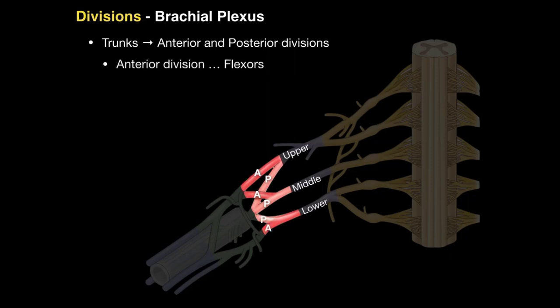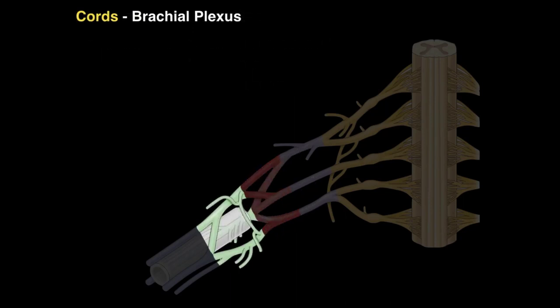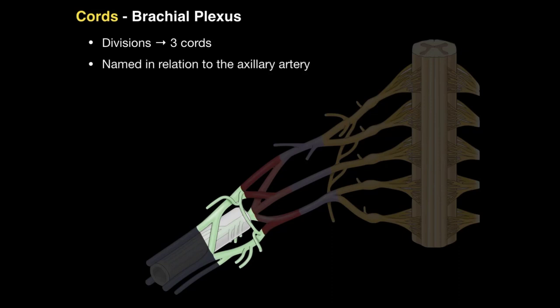The anterior divisions give rise to motor neurons that go to flexors, while the posterior divisions give rise to motor neurons that go to extensors. These divisions then give rise to what are called the cords of the brachial plexus, which are named in relation to the axillary artery.